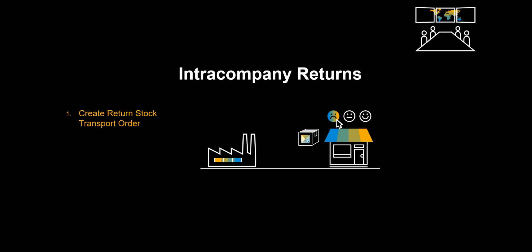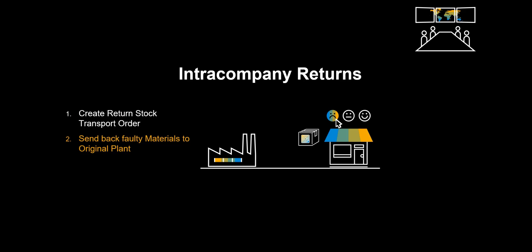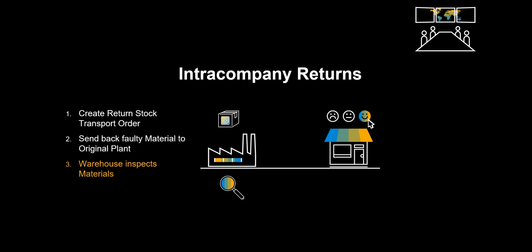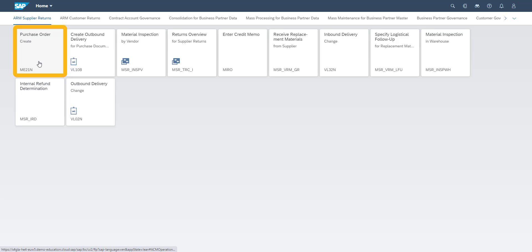In this scenario we will start off by creating the return stock transport order. Next, we will send back the faulty material to the original plant, where the warehouse will inspect the materials in order to determine the follow-up activities. We begin by creating the return order, which is the basis for an orderly return procedure for an intracompany return.